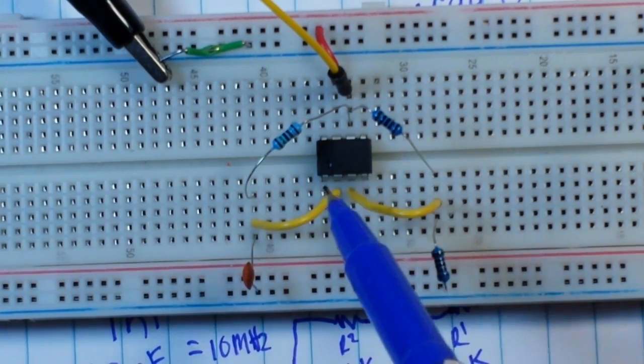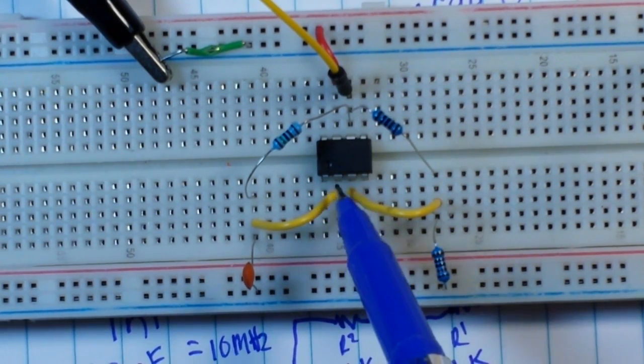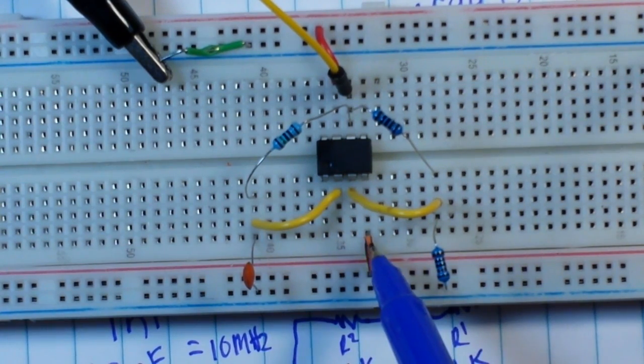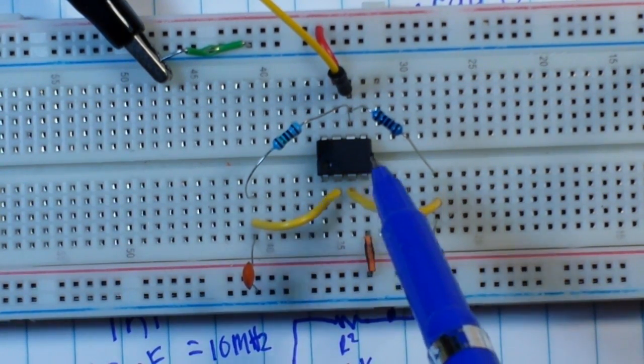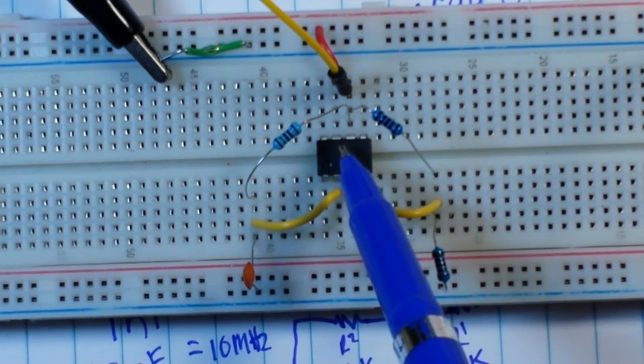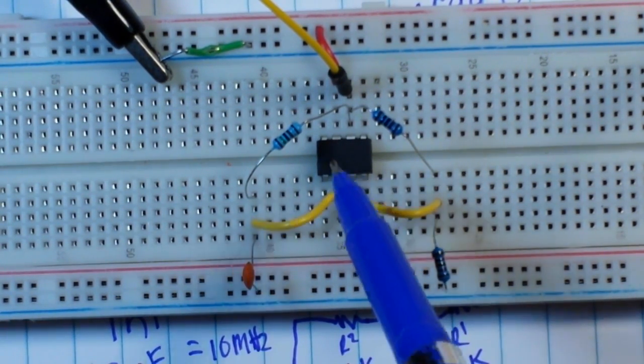All right, so here's our 741 op-amp. Here's pin one, pin two which is our inverting input, pin three our non-inverting, pin four is our negative voltage supply, pin five we're not using, pin six is our output, pin seven is our positive voltage, and pin eight we're not using.